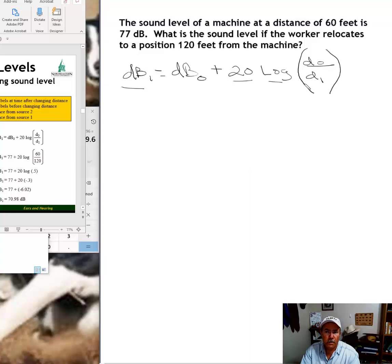Then in parentheses or brackets, we have D sub zero, which is the original distance from the sound. Then we have D sub one, which is the distance after we've relocated, distance from the sound after we've relocated.